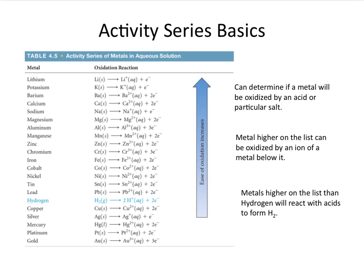And what's neat about the activity series here is that a metal that's higher on the chart is going to be readily oxidized by a metal ion that is below it in the chart. So what does that mean? That means that, for instance, lithium can be oxidized by potassium ion, barium ion, calcium ion, and so forth.